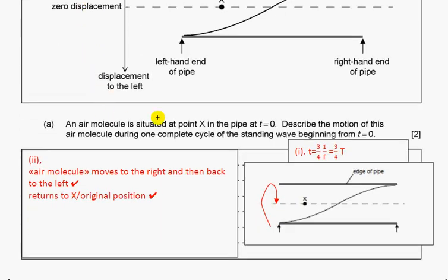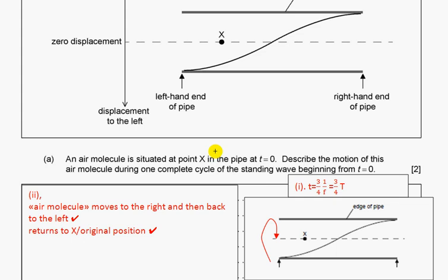An air molecule is situated at point X in the pipe at time zero. Describe the motion of this air molecule during one complete cycle of the standing wave beginning from time zero. The air molecule will move to the right and then back to the left, returning to the original position.